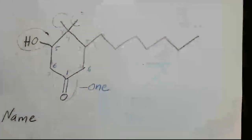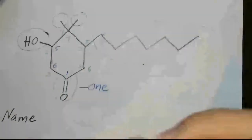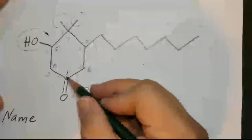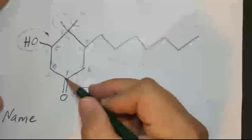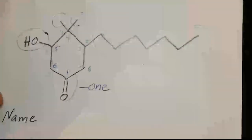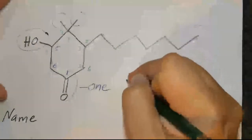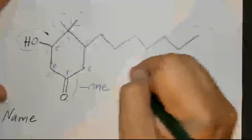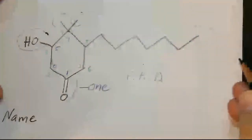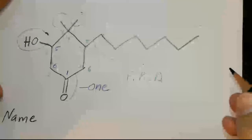To determine which numbering direction is correct, since priority is already resolved by making the functional group carbon number one, we still have two choices. We use the first point of difference rule, which means you collect all the locants and put them in numerical order for both directions.